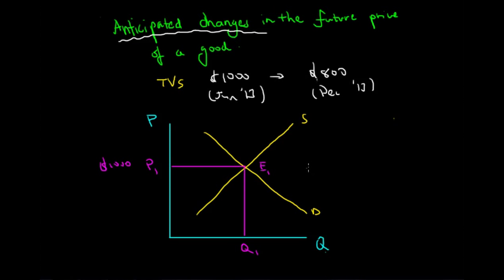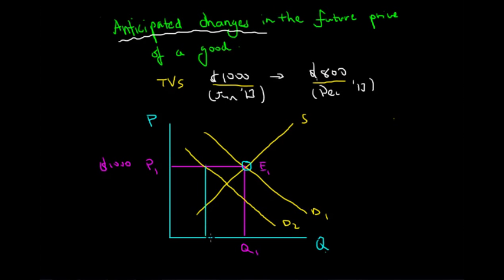Because we anticipate a decrease in price, the demand for TVs now will decrease at every level. Consumers are less willing to purchase a TV now for $1,000 because they anticipate the price to decrease to $800. At the current equilibrium quantity QE, supply remains at Q1, but the new quantity demanded is at Q2, so we experience a surplus in supply and the TV market is not being cleared.